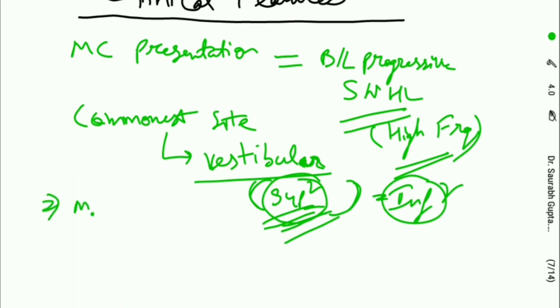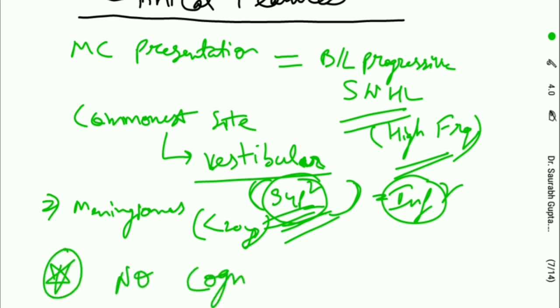Other features can be present like meningiomas before 20 years which are commonly benign, and other spinal cord tumors like schwannomas or ependymomas. Tumors in NF2 never undergo malignant change. One important thing: there is no cognitive impairment in NF2. This is very important because in NF1 there is cognitive impairment, but in NF2 there is no cognitive impairment.